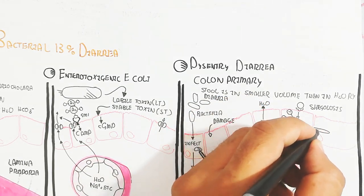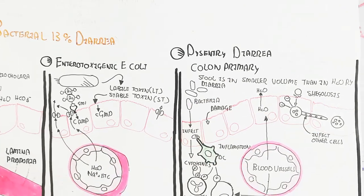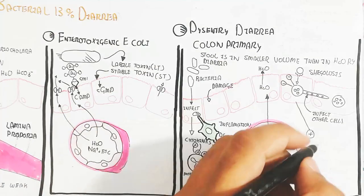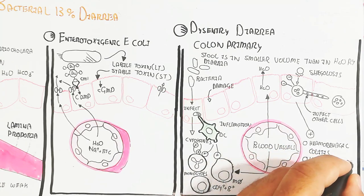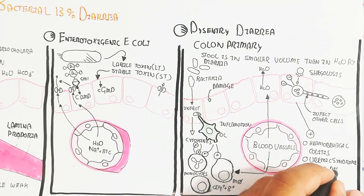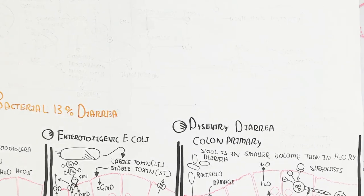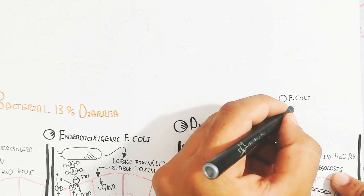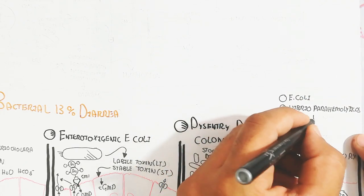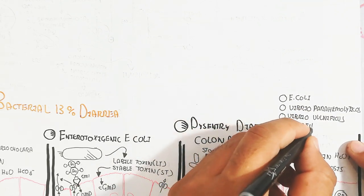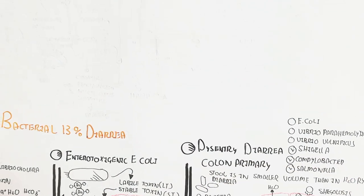Shigellosis through Shigella virus infects and causes plasma membrane damage and infects other cells through finger-like projections. This causes hemorrhagic colitis, uremic syndrome, liver disease, ulceration, and bleeding. This type of bacterial infection can be E. coli, Vibrio parahaemolyticus, Vibrio vulnificus, Shigella, Campylobacter, and Salmonella.